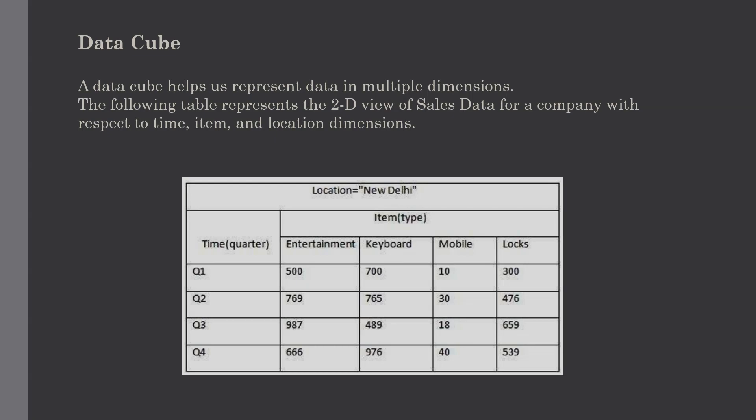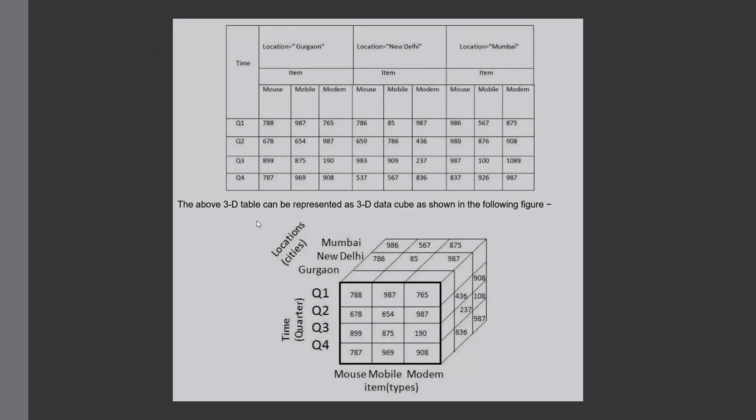In this 2D table we have records with respect to time and item only, so the sales for New Delhi are shown with respect to time and item dimensions according to the type of item. But if you want to view the sales data with one more dimension — say the location dimension — then the 3D view would be more useful. The 3D table of sales data with respect to time, item, and location will be more useful compared to this 2D view.